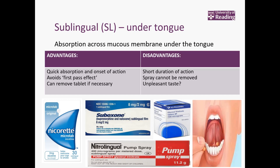It's quick in absorption and gives a quick onset of action. This is very helpful for things like glycerol trinitrate — GTN tablets or the GTN spray — where someone has angina and chest pain and wants a quick effect. These are very helpful when someone needs something very quickly, and the tablet could potentially be removed if needed, but if it's a spray, that would obviously be more difficult to remove.